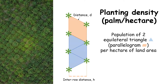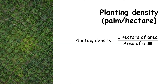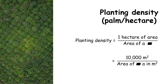Planting density is equal to one hectare of area divided by the area of a parallelogram. One hectare is equal to 10,000 square meters, and the area of the parallelogram is expressed in square meters as well.